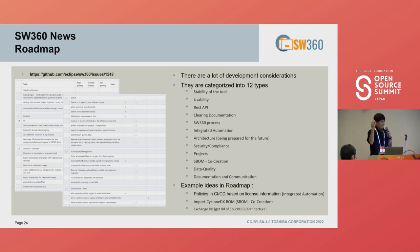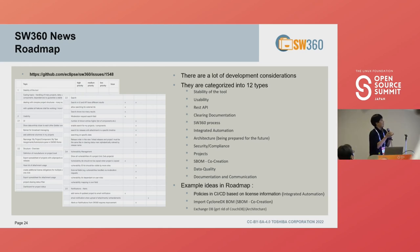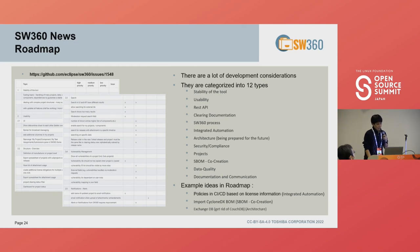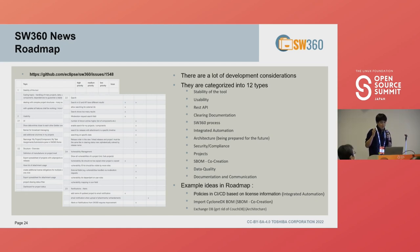All of us on the SW360 team are discussing the roadmaps, and from the roadmap page you can see these plans. There are a lot of ideas for how to improve SW360, and they are categorized into three types: stability of tools, usability, and REST API, among others.